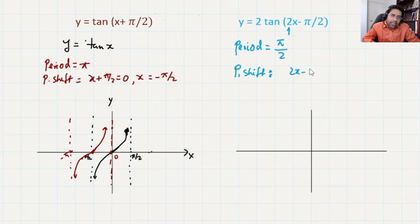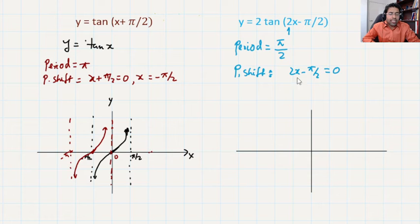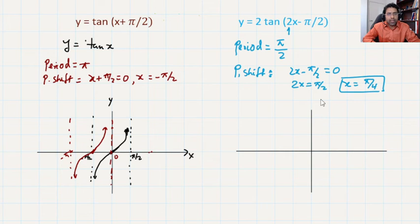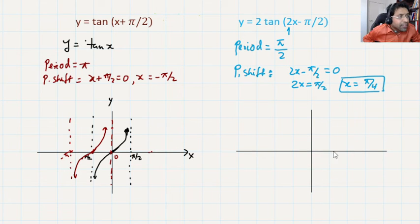For the phase shift, we set 2x - π/2 = 0. Solving gives 2x = π/2, so x = π/4. That is our phase shift: x = π/4. So the graph shifts to start at π/4.